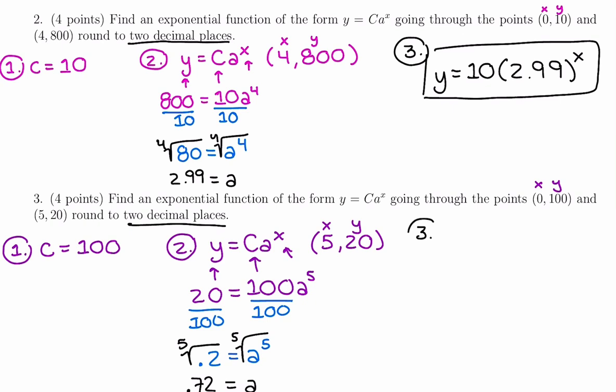it could be a decay factor instead of growth factor like last time. We have y equals 100 times 0.72 to the x as our final answer. We've gotten the initial value, the decay factor.